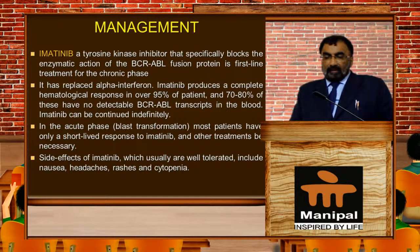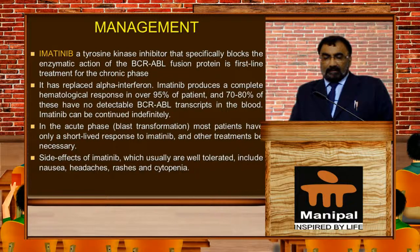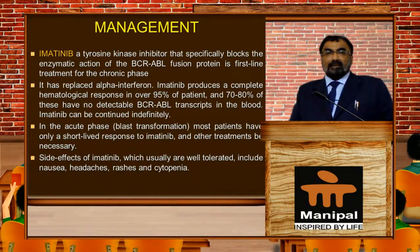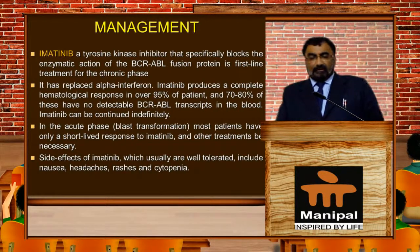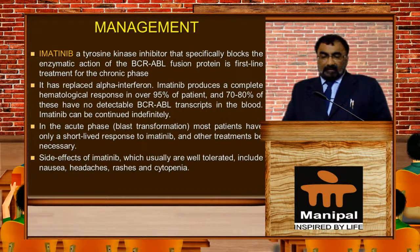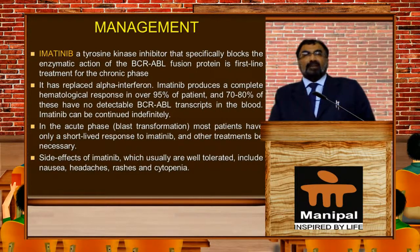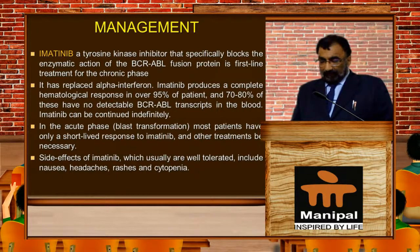Imatinib has also replaced alpha interferon, which was earlier used in treatment of chronic myeloid leukemia. Imatinib produces a complete hematological response in over 95% of patients, and 70 to 80% of these have no detectable BCR-ABL transcripts in the blood. Imatinib can be continued indefinitely. In the acute phase — blast transformation — most patients have only a short-lived response. Side effects, which are usually well tolerated, include nausea, headache, rashes, and cytopenia.